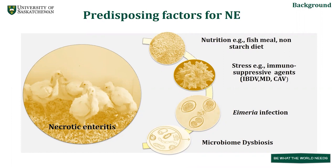Across Canada, IBDV is the most critical viral stressor, as 52 percent of chicken farms are affected. In addition, coccidiosis — a protozoal parasite completing its life cycle in the intestine — causes physical damage and hemorrhages, releasing plasma proteins that are utilized by C. perfringens to divide. Once it starts dividing, it releases bacteriocins, which are toxic compounds that suppress the growth of other bacteria and lead to microbiome dysbiosis.